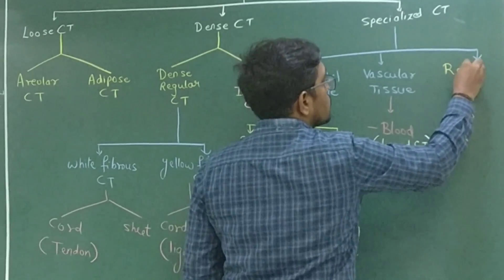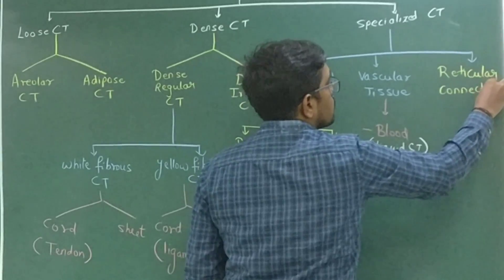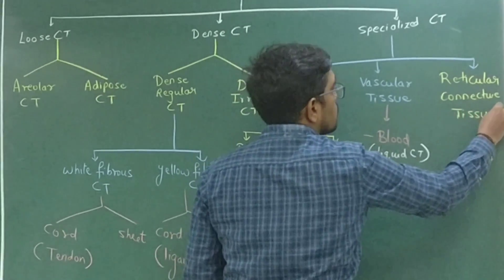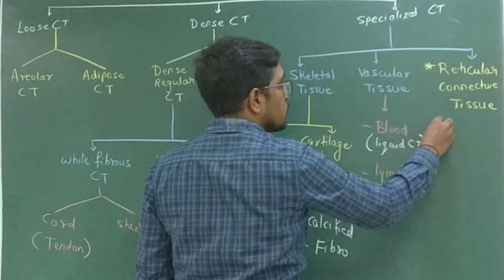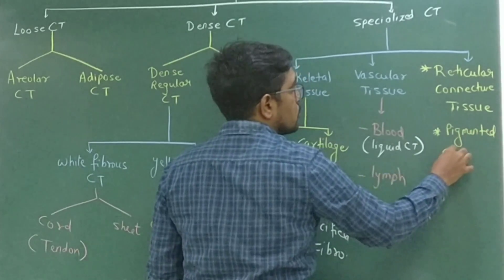Then we have reticular connective tissue. There is one more type of specialized connective tissue that is called pigmented connective tissue.